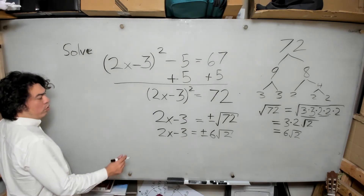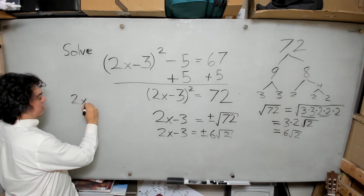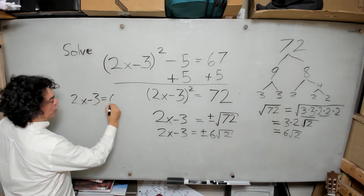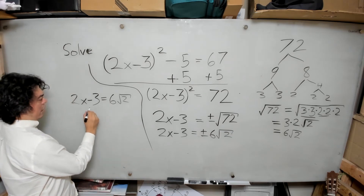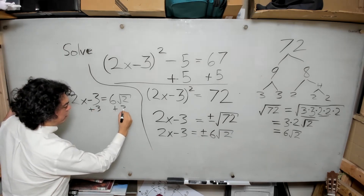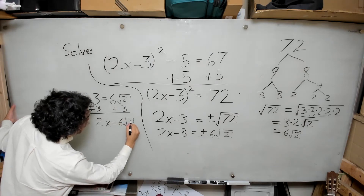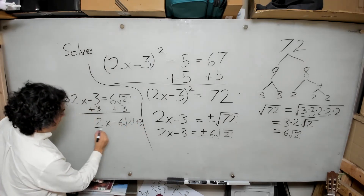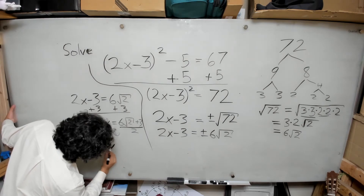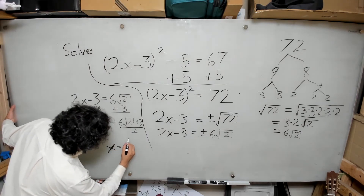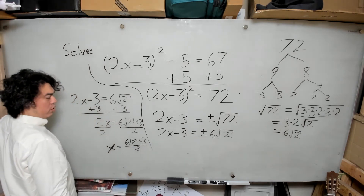Now I'm going to find the two roots. First, I set 2x minus 3 equal to positive 6 root 2. I add 3 to both sides and get 2x equals 6 root 2 plus 3. Then I divide both sides by 2, giving x equals (6 root 2 plus 3) divided by 2. That's the first root.